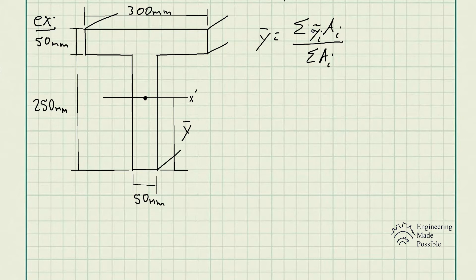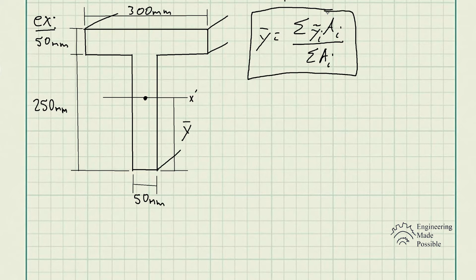The equation to solve for the centroid is the sum of y-bar-i times A-i, divided by the sum of all cross-sectional areas. This T-beam is composed of simpler geometries — we have two rectangles here. We solve for the centroid with respect to the y-axis. Let's go ahead and do that.